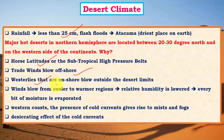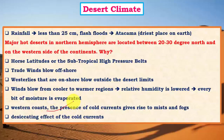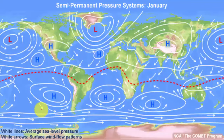Westerlies blow onshore outside the desert limits, meaning they don't bring rainfall to these desert regions. Winds blow from cooler to warmer regions, resulting in very low relative humidity — this is called the desiccating effect, where moisture is lost from the air, leaving very little for precipitation. Cold currents are also very important in creating the desiccating effect — they decrease relative humidity so that incoming air to these regions is very very dry, further contributing to desert conditions.